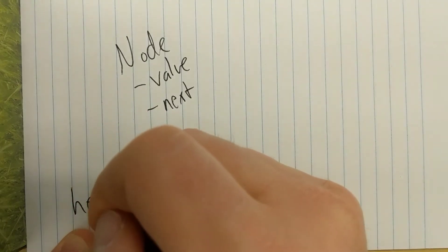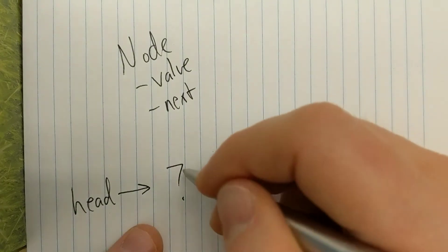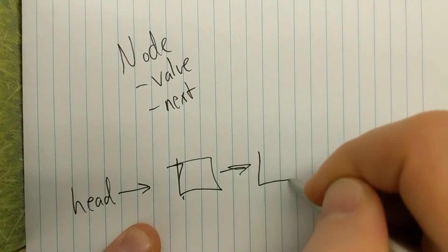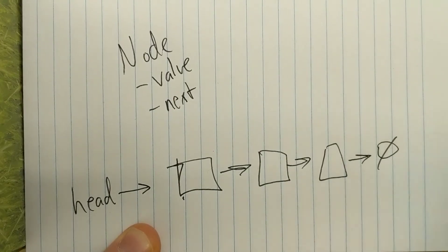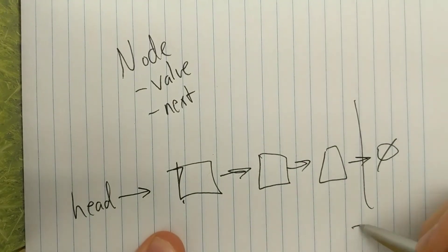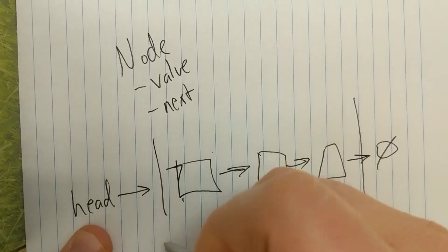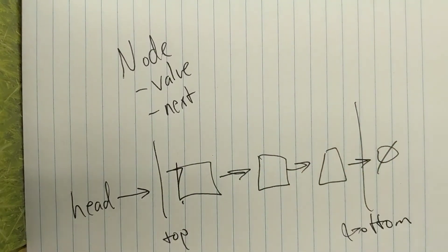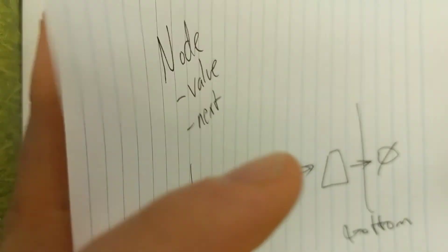If we have a stack, we start with just a head. Head might point to a node, which may point to another node, which may point to another node, which may point to null — that's the bottom of our stack. The very first node is the top, and the node at the far end of the sequence is the bottom.